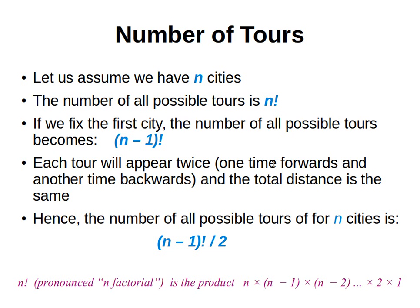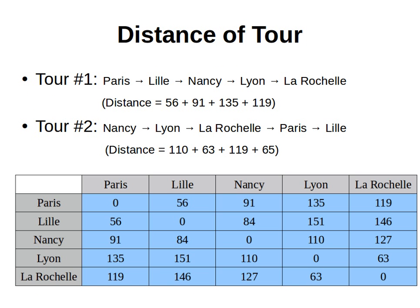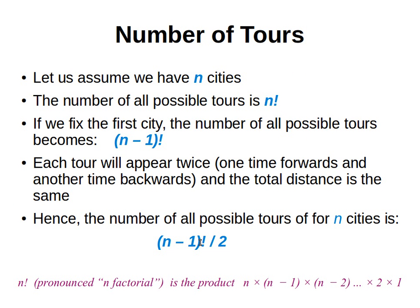If we fix the first city, we will have (n−1)! tours. Another thing to note is that each tour will appear twice — once in one direction and once in the opposite direction — and the total distance will be the same. For example, if one tour is Paris → Lille → Nancy → Lyon → La Rochelle, the reverse tour La Rochelle → Lyon → Nancy → Lille gives the exact same distance. This allows us to cut the number of possible tours in half.